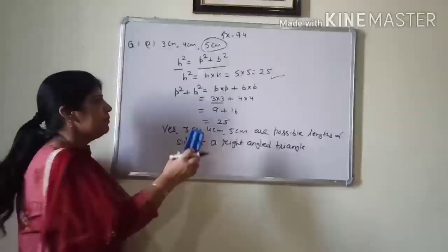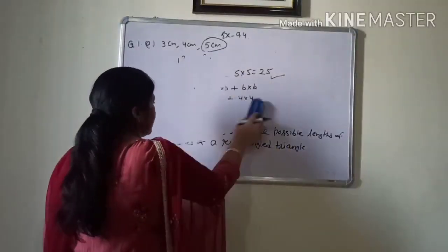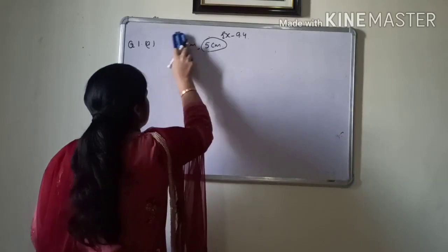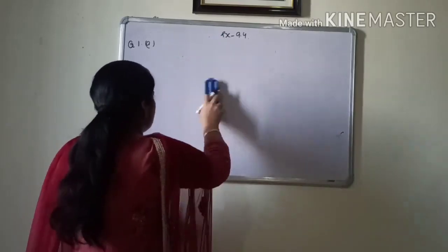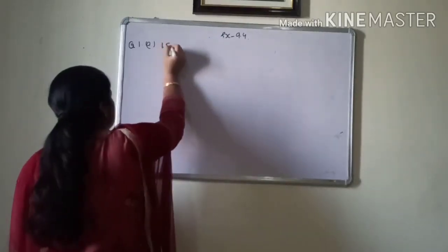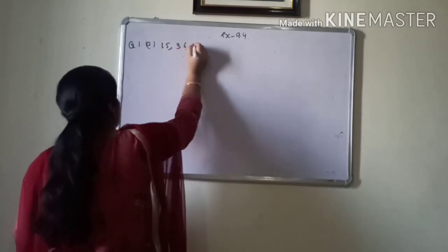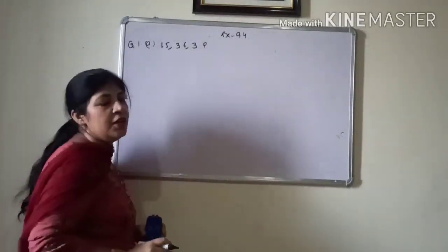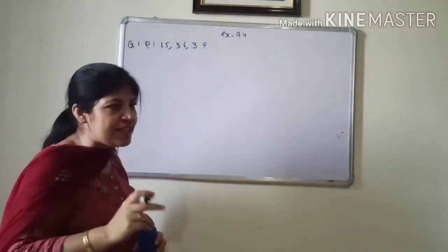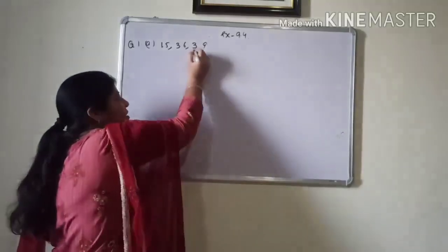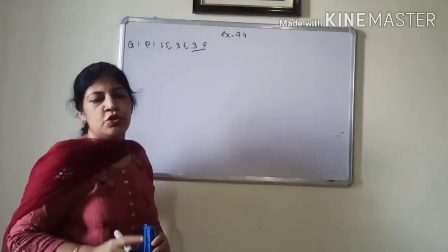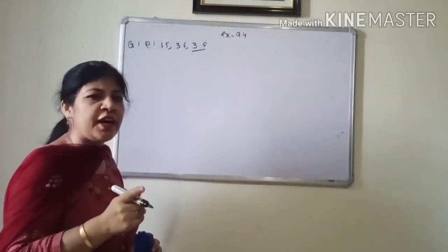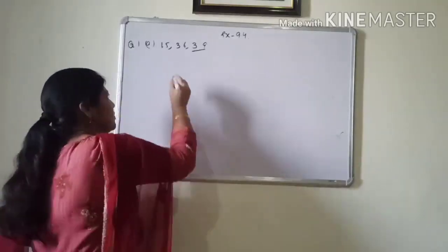Let's check with another sides. 1.5, 3.6 and 3.9 cm. Now, which is the greatest side? Yes, 3.9. So, we will take 3.9 cm as hypotenuse.